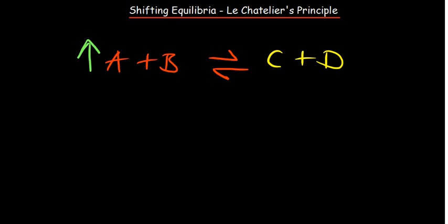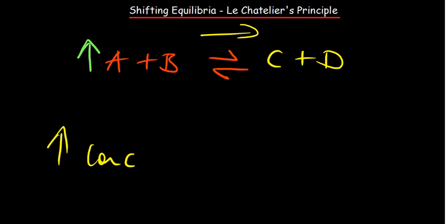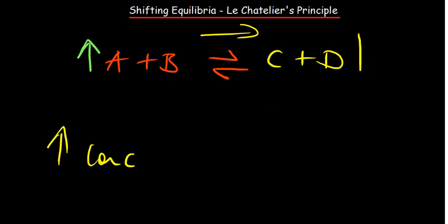Increasing the concentration of A would drive the forward reaction. Why? Because we're going to have more reactants, and if you go back to your kinetics, you know that an increase in concentration leads to an increase in the rate of reaction. In this case, where we have both forward and backward reactions, increasing the concentration of A means we've increased the concentration of reactants for the forward reaction. So if you increase the concentration of what is on the left, it will go towards the right. If you increase the concentration of what is on the right, it will go towards the left.